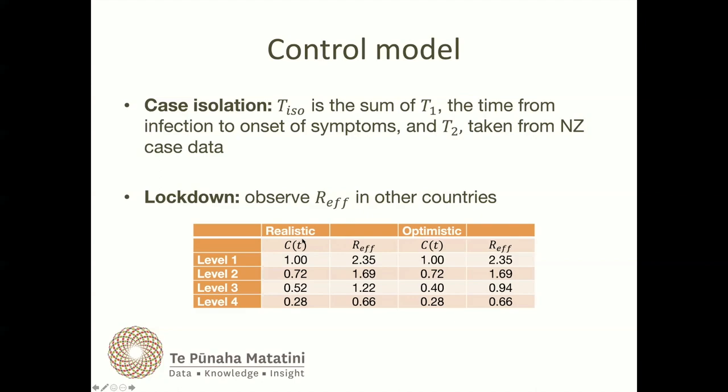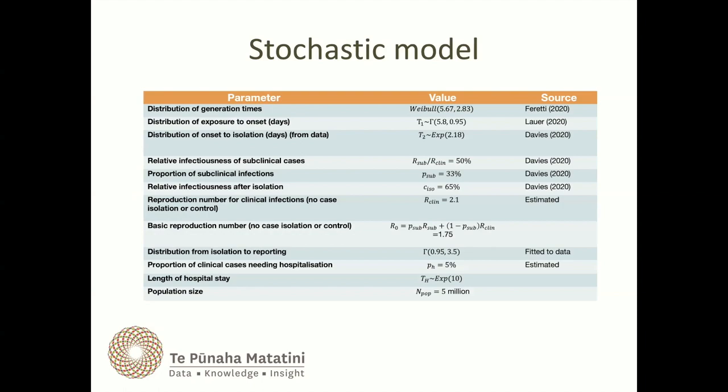One of the most difficult things is assessing population-wide controls. We've been looking at what sort of measures overseas countries have had and how much those have reduced their effective reproduction number. We choose our control function C to give us reproduction numbers equivalent to those we're seeing overseas, categorized as realistic and optimistic. There are a lot of uncertainties in clinical and public health parameters — we understand as modelers that those uncertainties exist but can't always make the best judgments about what numbers to put in or what's a reasonable range.